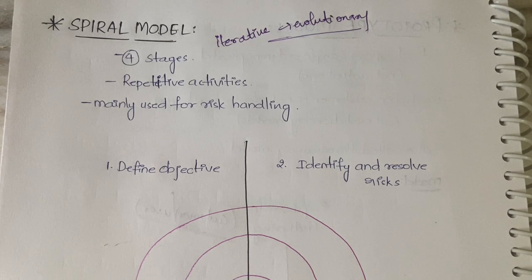Before that, one more thing - I've started a new channel with study abroad content. If you're interested, I'll leave the link in the description. Now let's see the spiral model. It actually has four stages and is an endless loop.